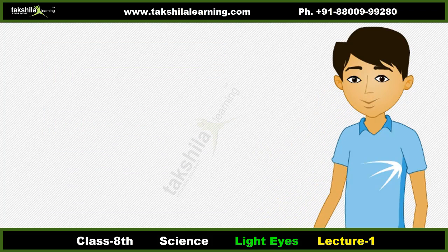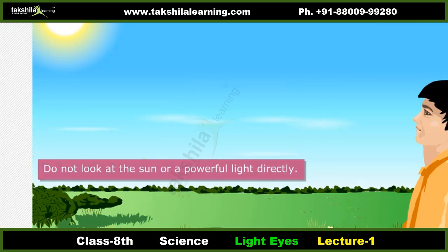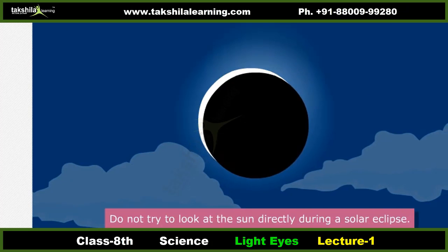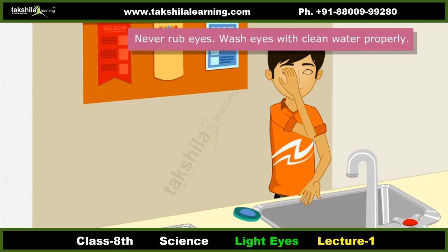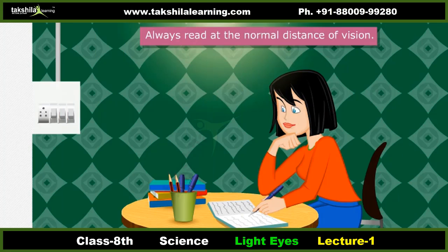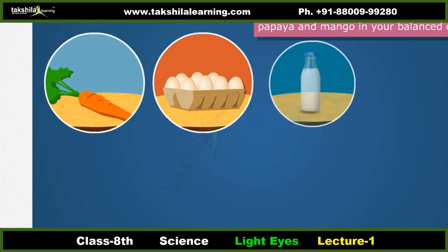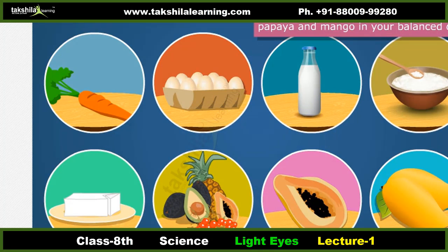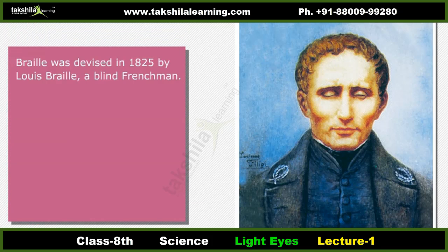Precautions for eye care: Do not read in too little or too much light. Do not look at the sun or a powerful light directly, and never look at the sun during a solar eclipse. Never rub your eyes; wash them with clean water. Always read at the normal distance of vision. Blink your eyes and close them for a few minutes every half hour while working on a computer. Include vitamin A-rich foods like carrots, eggs, milk, curd, cheese, papaya, and mango in your diet.